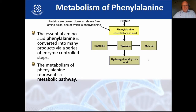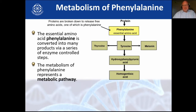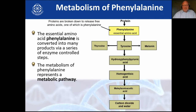Tyrosine can also be converted into hydroxyphenylpyruvic acid. Another enzyme takes the hydroxyphenylpyruvic acid and converts it into homogentisic acid. The homogentisic acid is converted into maleylacetoacetic acid, and that is eventually converted into carbon dioxide and water. If an enzyme is faulty along any of these lines, it will have an effect — the previous intermediate will build up, and the one that was supposed to come after will not exist.